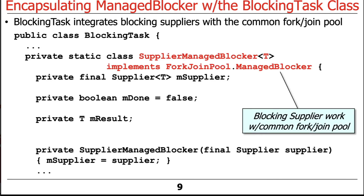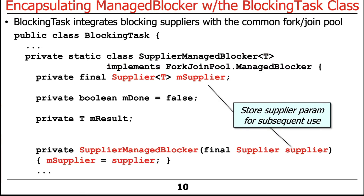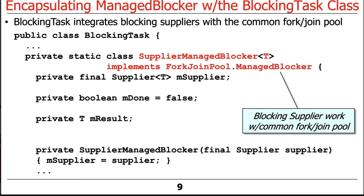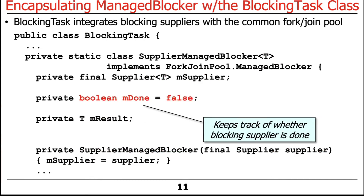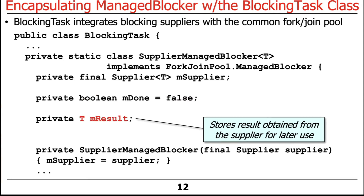Let's now look at the SupplierManagedBlocker class. This is a nested class inside the scope of BlockingTask, and it basically integrates the use of a blocking supplier to work with the common ForkJoinPool. It has a couple of fields: a supplier field that stashes the parameter passed to it by the constructor, a field that tracks whether we're done, and a field that tracks the result.